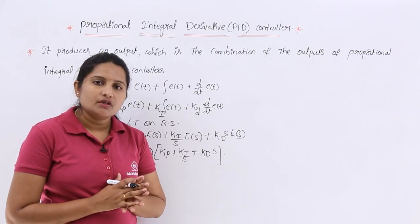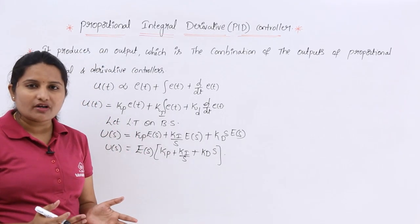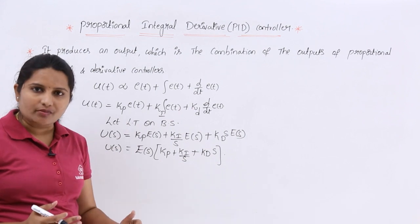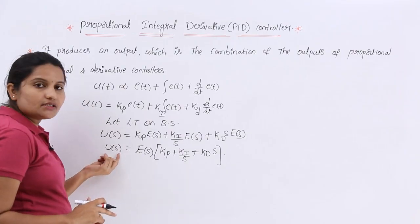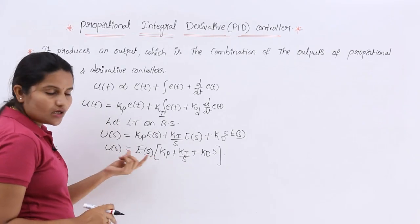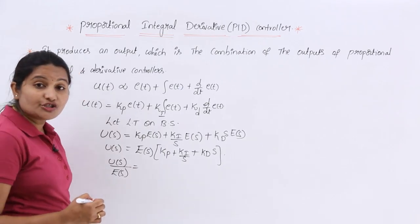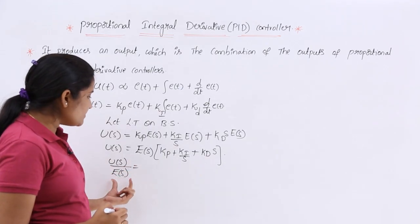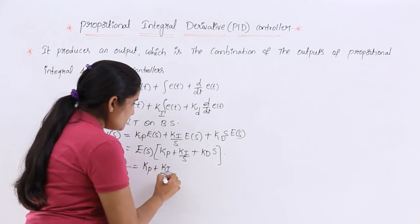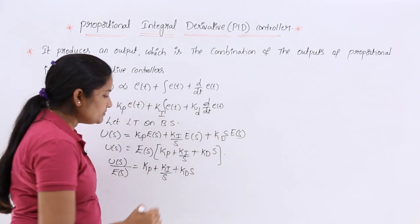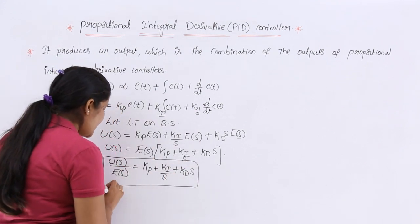We take the Laplace transform to derive the transfer function. The definition of transfer function for any system is output transform divided by input transform. For this controller, output is U(s) and input is E(s). So the transfer function U(s)/E(s) equals Kp + Ki/s + Kd·s. This is the transfer function of the PID controller.